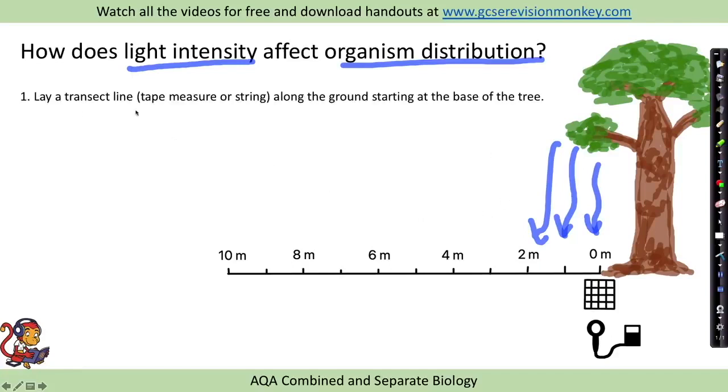So what we'd do is we'd lay a transect line, this could be a tape measure or some string, along the ground starting at the base of the tree. We would place a quadrat at the zero metres mark and count the number of organisms, so for example daisies or it could be something else that you're looking at, present in the quadrat.